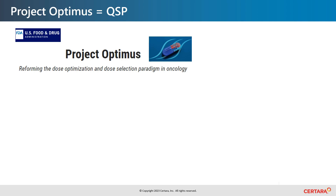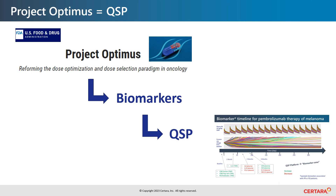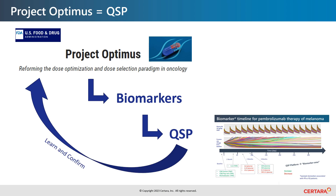Mapping the QSP model-predicted IL-12 levels in plasma shows a clear separation between responders and non-responders at approximately three months, suggesting that plasma IL-12 can be used as a predictive biomarker — an early indicator of clinical response. We have done a similar analysis for many other potential biomarkers and recently presented these results to the FDA. In summary, Project Optimus aims to improve dose optimization and dose selection in early oncology development; biomarkers will play a key role, and QSP is ideally placed to guide biomarker selection and link these to dose predictions in a learn-and-confirm manner.